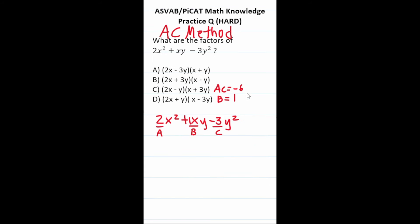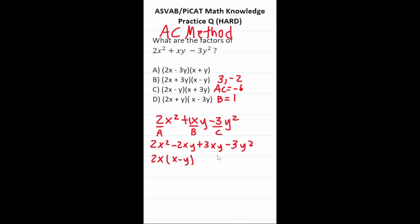For this ASVAB PiCat practice question, we're going to factor 2x squared plus xy minus 3y squared using the AC method. A is 2, C is negative 3, so A times C is negative 6, and B is 1. We replace the middle term with two numbers that multiply to negative 6 and add to positive 1: that's 3 and negative 2. This becomes 2x squared minus 2xy plus 3xy minus 3y squared. Factoring by grouping gives 2x(x minus y) plus 3y(x minus y), so our solution is (2x plus 3y)(x minus y), which is answer choice B.